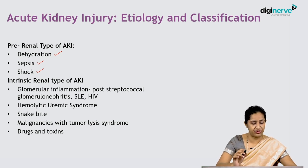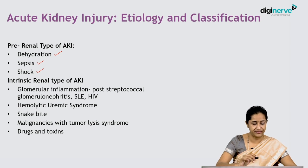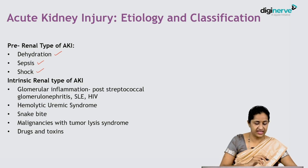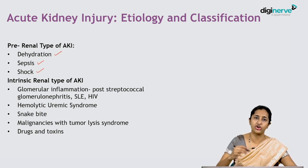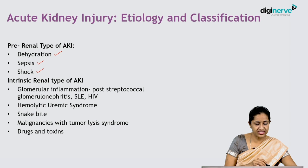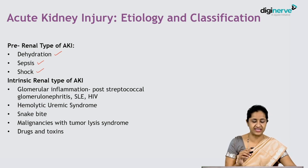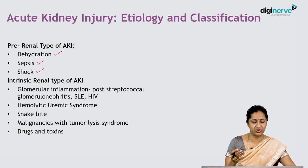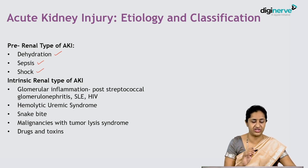The intrinsic type of acute kidney injury has causes primarily affecting the kidney itself. Here you can have glomerular inflammation or tubular inflammation. For glomerular inflammation, the classic example is post-streptococcal glomerulonephritis. It can also be due to systemic lupus erythematosus or pediatric HIV, but the pathology is glomerular inflammation.